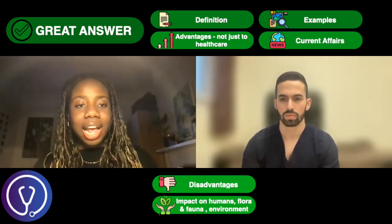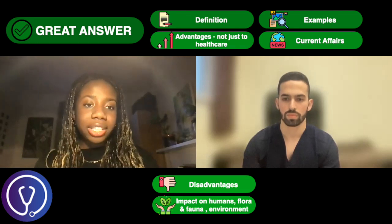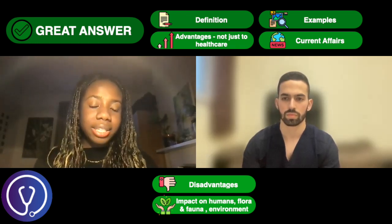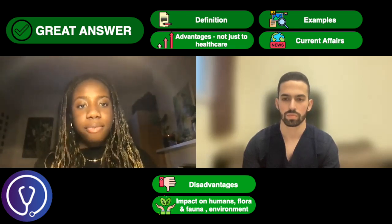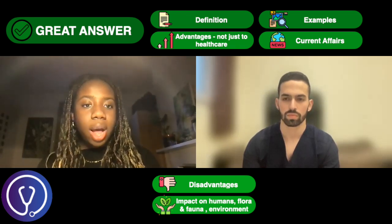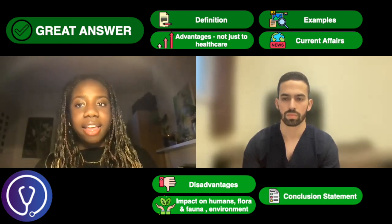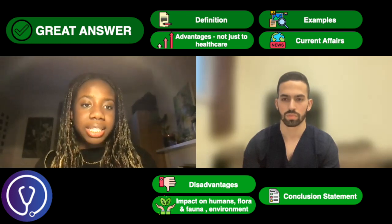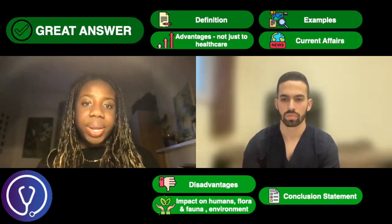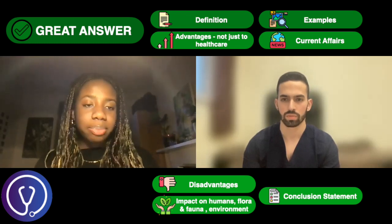There's also the autonomy aspect — thinking about whether people know if the food they are eating has been edited — and also the potential effects on the environment with editing plants and affecting biodiversity. Overall, there are quite a lot of issues concerning gene editing.